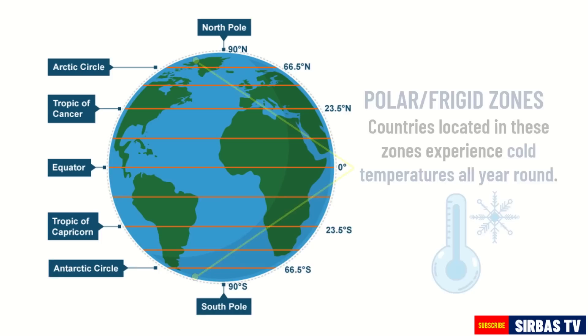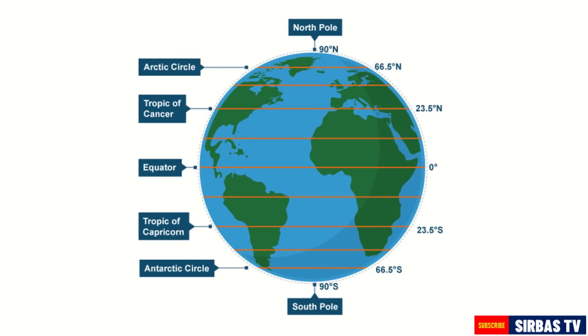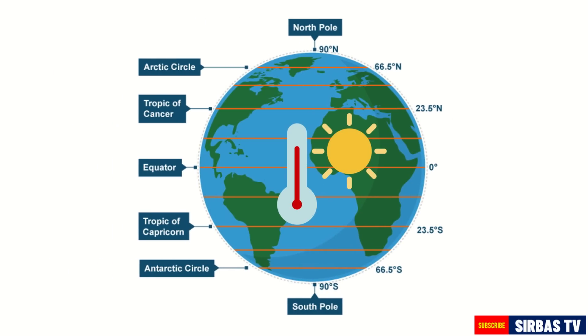Based on this, we can say that the closer the latitude is to the equator, the warmer the temperature. And the closer it is to the poles, the colder the temperature.